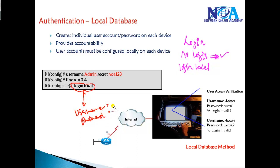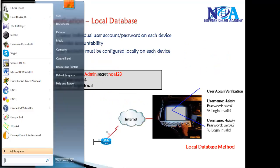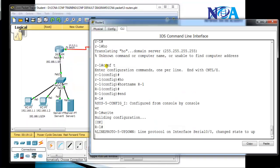This is a more common way of authenticating device access. If anyone tries to log into your router, it will prompt for the username and password, and that username and password has to be created on the local database. We need to create a username using the username command and assign a password. Let's get into the command line and verify these configurations.